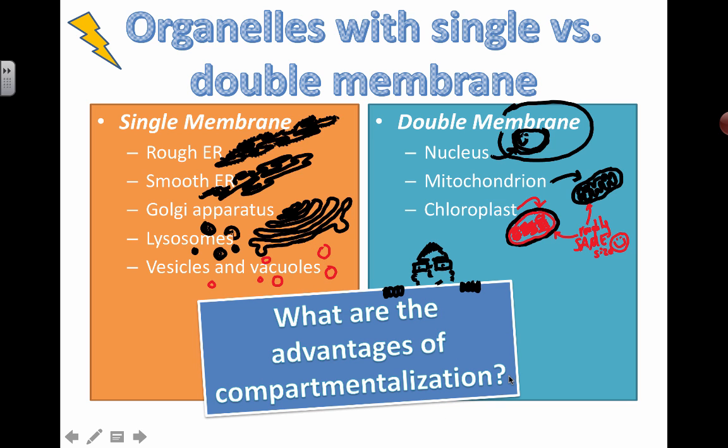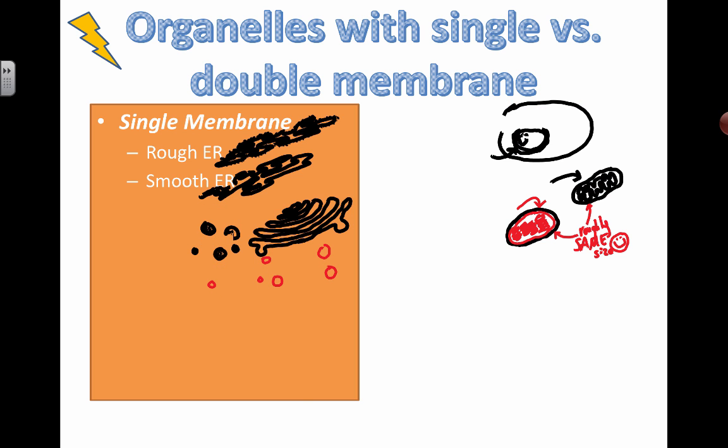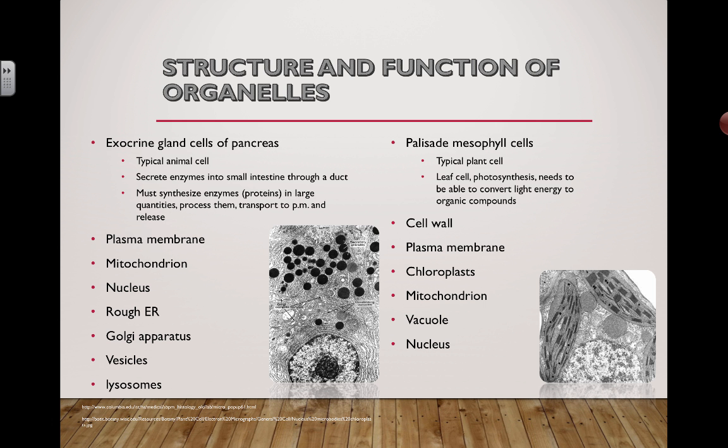Hopefully you got a good summary of the different types of structures you'd expect to find in cells. Remember the name palisade mesophyll cell as a typical plant cell, and also remember the name exocrine gland cell for this particular pancreatic cell, whose purpose is to produce enzymes and secrete them. Good luck with all of that.